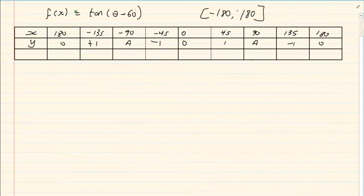Now we have f of x is equal to tan theta minus 60 and our restriction is minus 180 to 180. Now if I am minusing 60 then remember it's an x axis so we are usually working with the opposite. So I am adding 60. So you are going to add 60 to every x value.